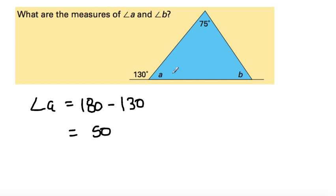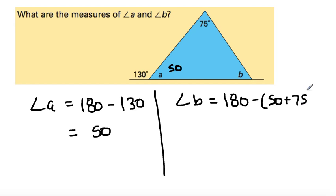So now we have two angles, 50 and 75. Angle B equals 180 minus, what is 50 and 75? 125. So 180 minus 125, anybody? What do you got? That's right, 55. So angle B is 55.